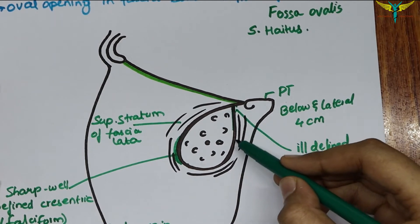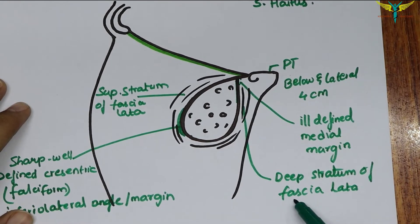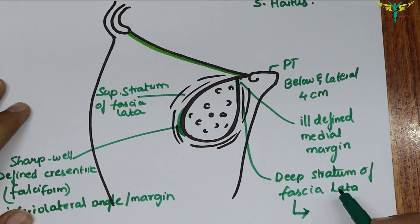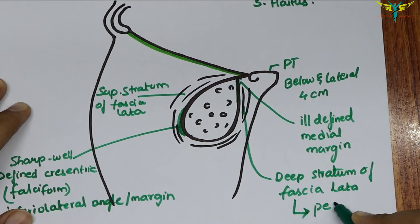This is the deep stratum of the fascia lata, and it merges with the fascia that overlies the pectineus muscle. That is called the pectineal fascia.